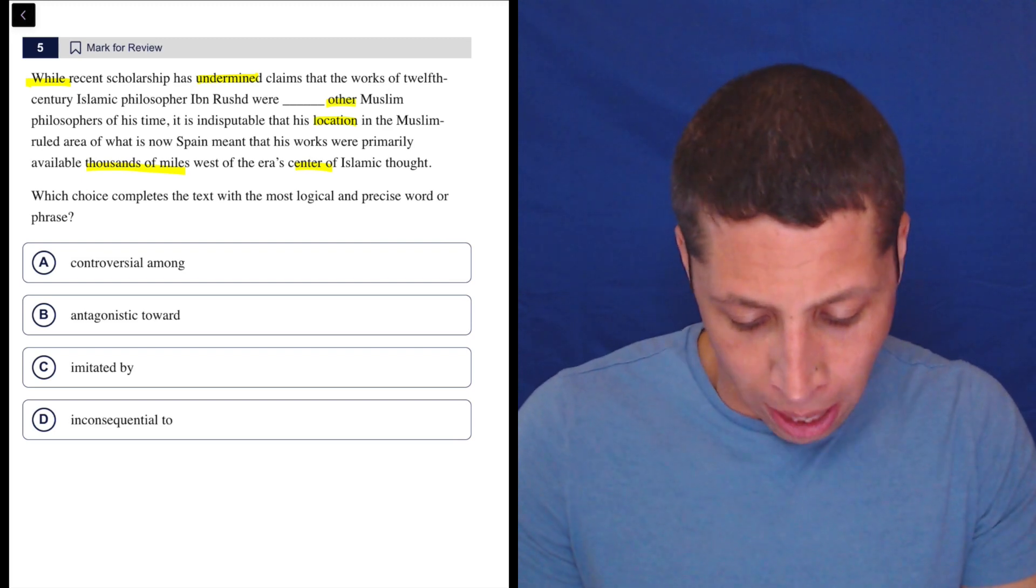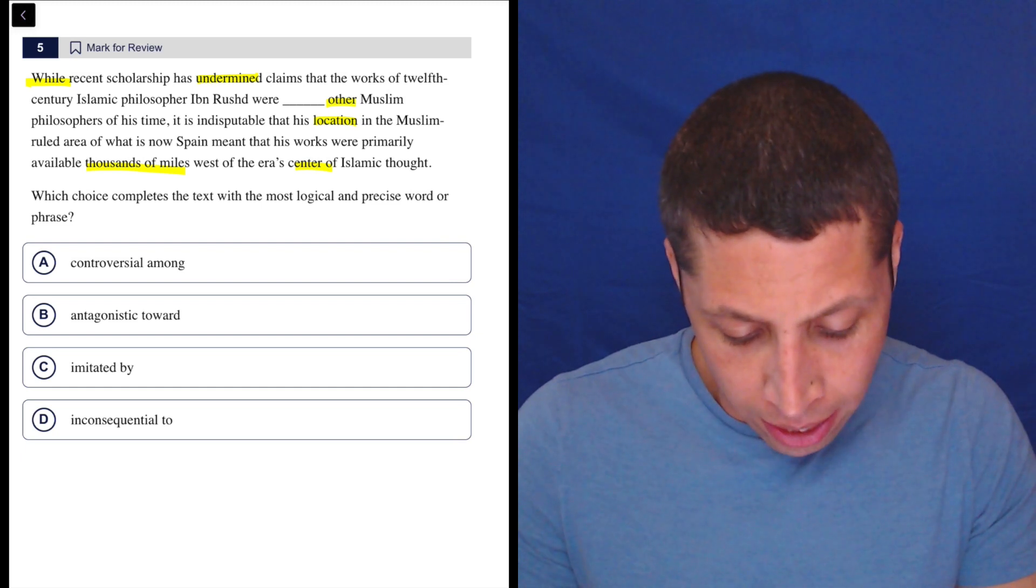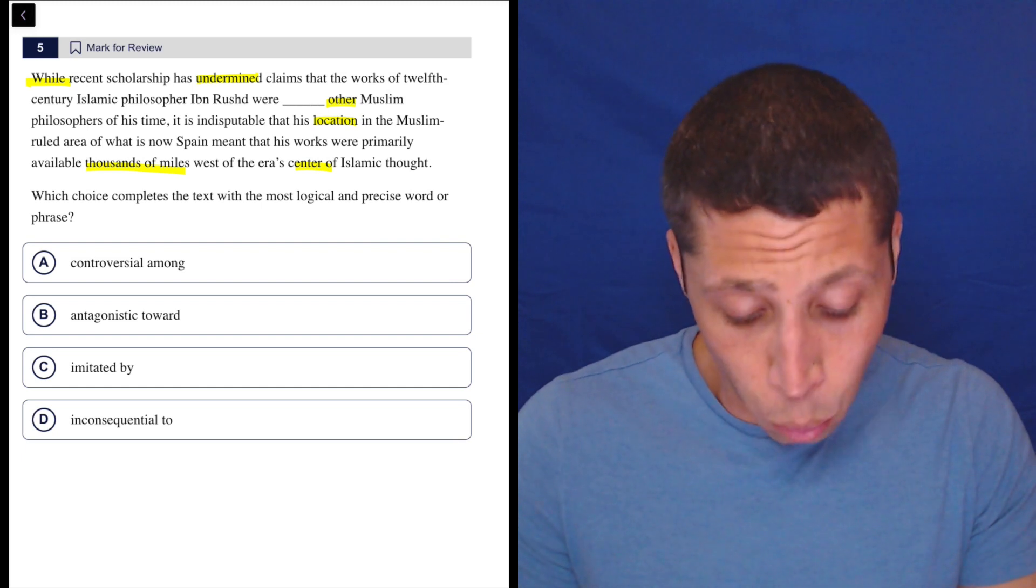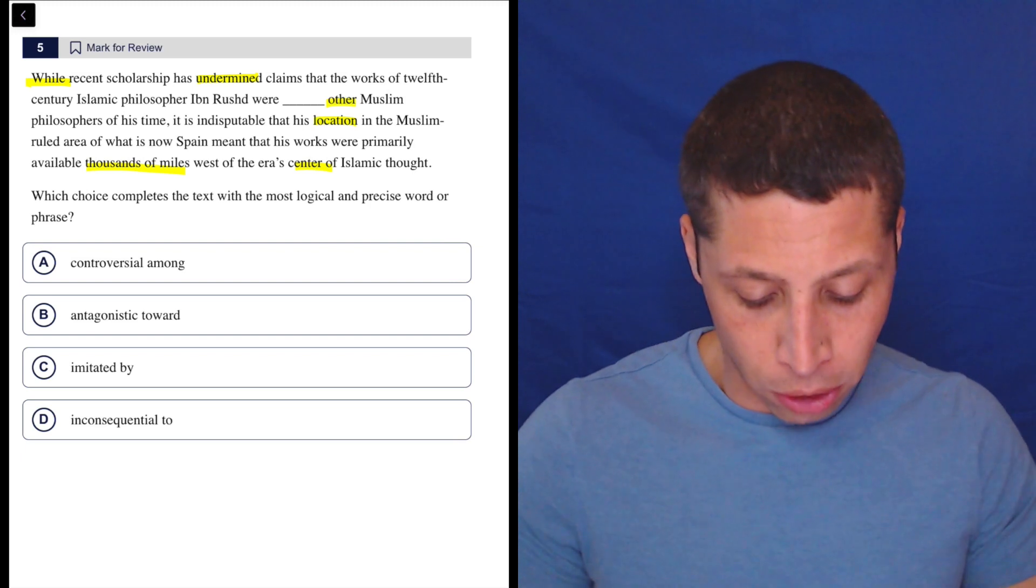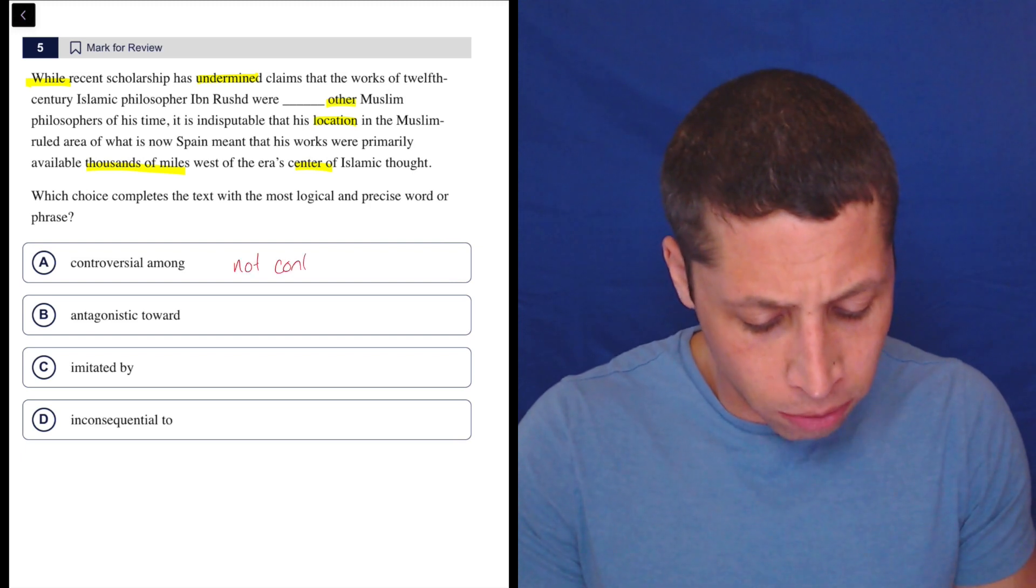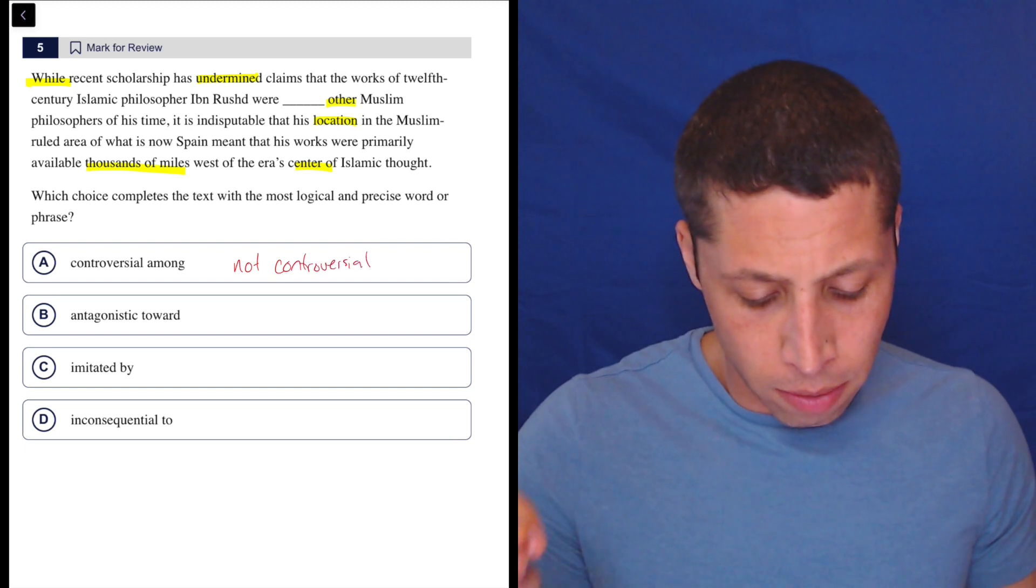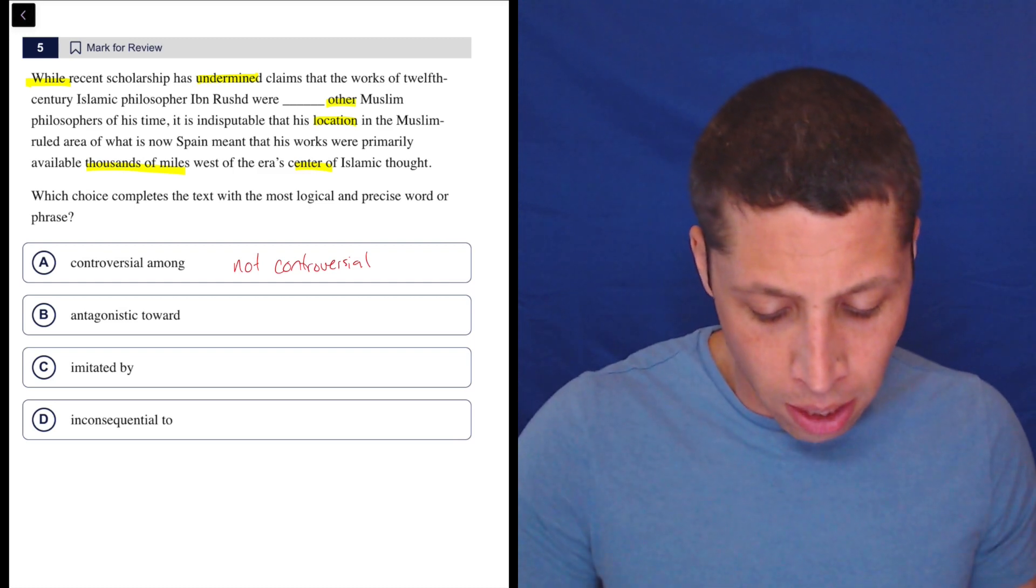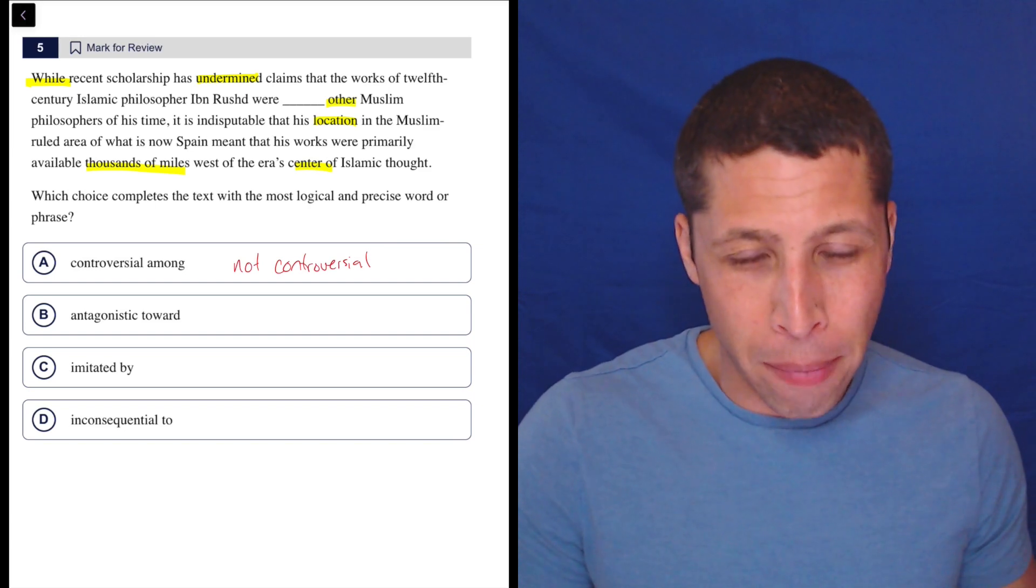So controversial among, okay. So while recent scholarship undermined claims that his works were controversial among Muslim philosophers of its time. So we're undermining the idea that it's controversial. So meaning that his works are not controversial. So I'm not even writing a definition here. I'm trying to understand the logic.